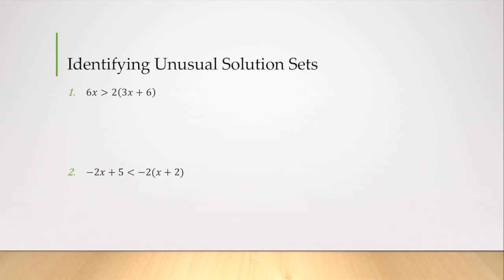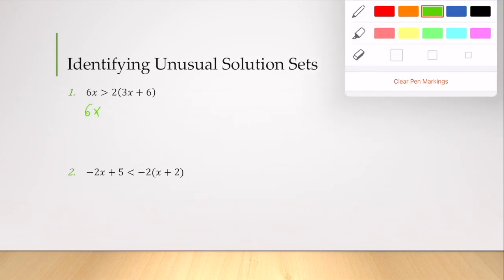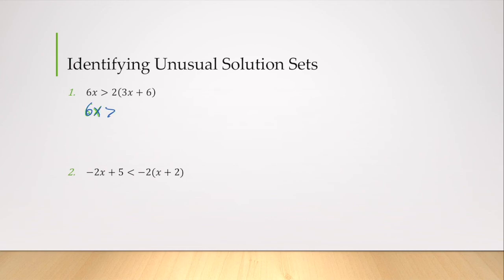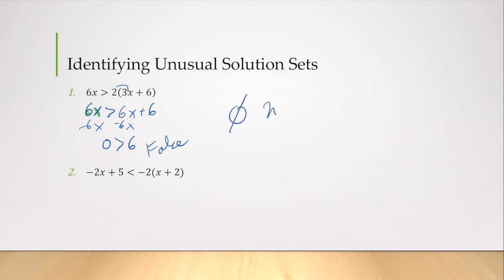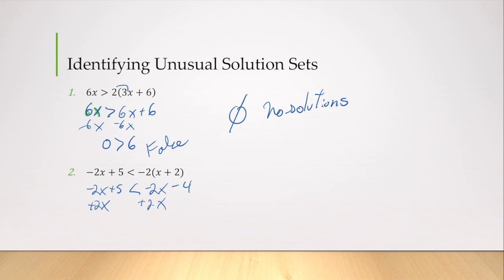Let's look at a couple more examples. I have 6x is greater than 2x plus 6, but wait — that simplifies to 6x greater than 6x plus 6, so 0 is greater than 6, which is false — no solutions. In the next example, 2x plus 5 is less than negative 2x minus 4. Adding 2x to both sides gives 5 is less than negative 4, which is also false, so no solutions. You can write the empty set symbol for these.